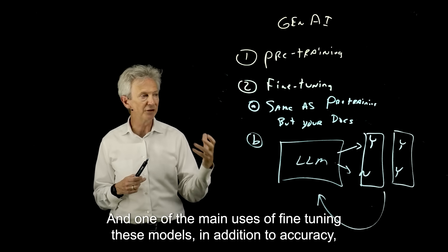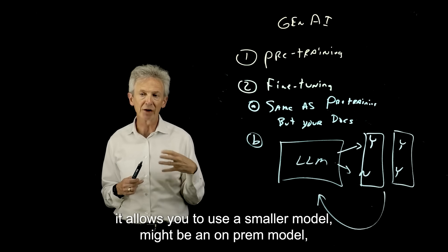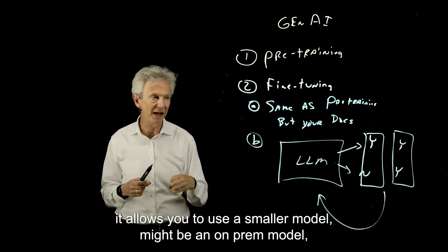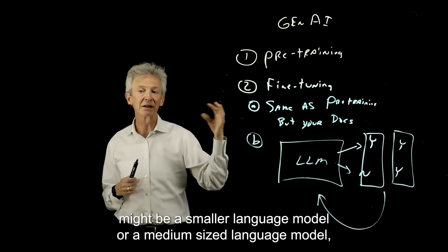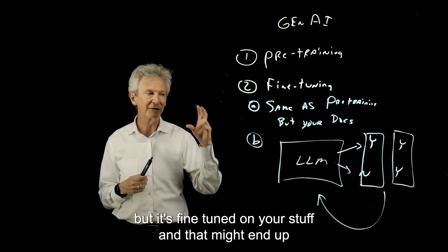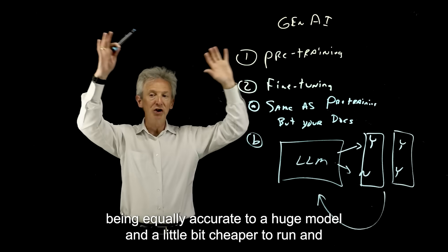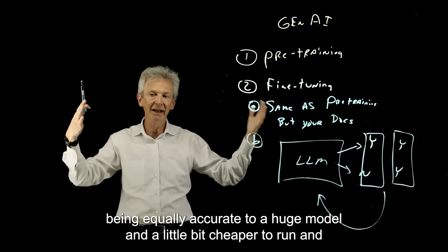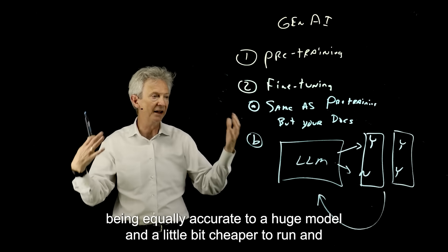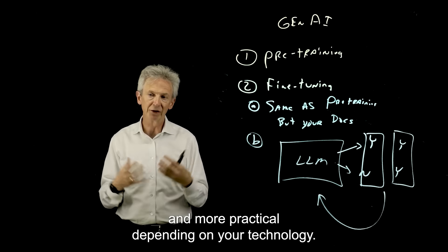And one of the main uses of fine-tuning these models, in addition to accuracy, it allows you to use a smaller model—might be an on-prem model, might be a smaller language model or a medium-sized language model—but it's fine-tuned on your stuff and that might end up being equally accurate to a huge model and a little bit cheaper to run and more practical depending on your technology.